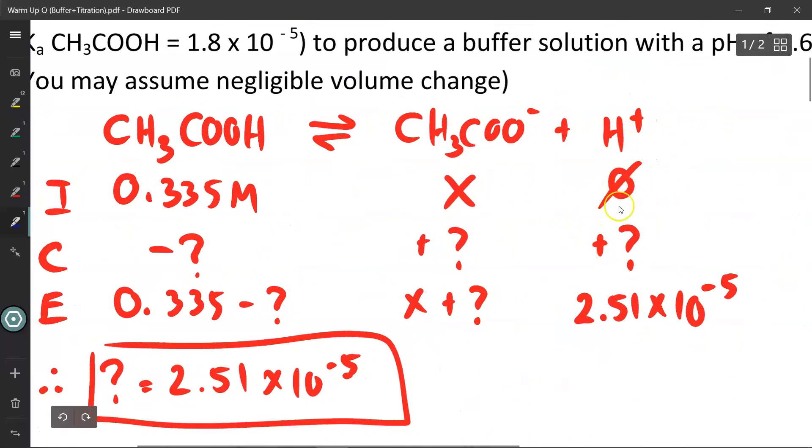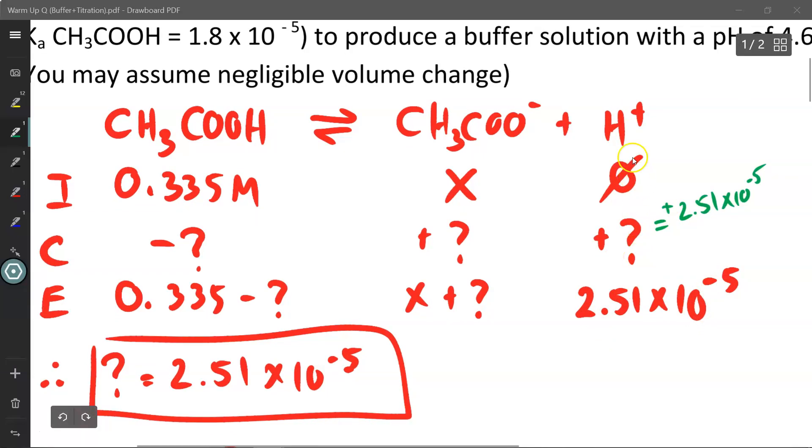So I can plug that in here to my ICE chart. Molar concentration of H plus ions is 2.51 times 10 to the power of negative 5. Since I know the initial concentration was zero and the final is 2.51 times 10 to the power of negative 5, then I know the change was 2.51 times 10 to the power of negative 5. Since this is a 1 to 1 to 1 molar ratio, then therefore these values are positive and negative 2.51 times 10 to the power of negative 5.